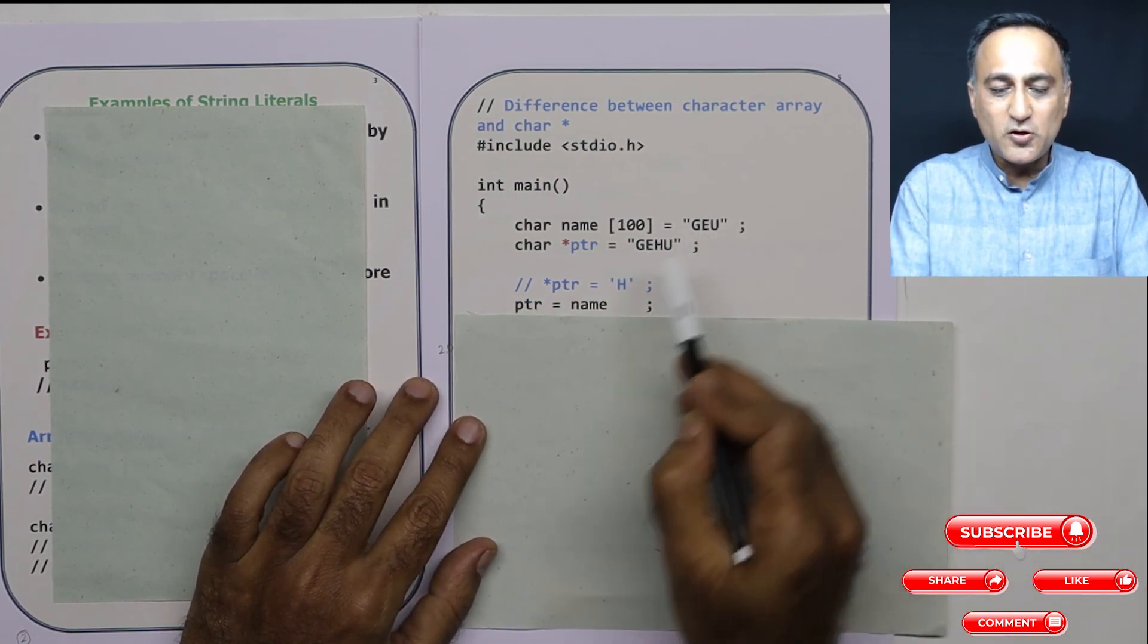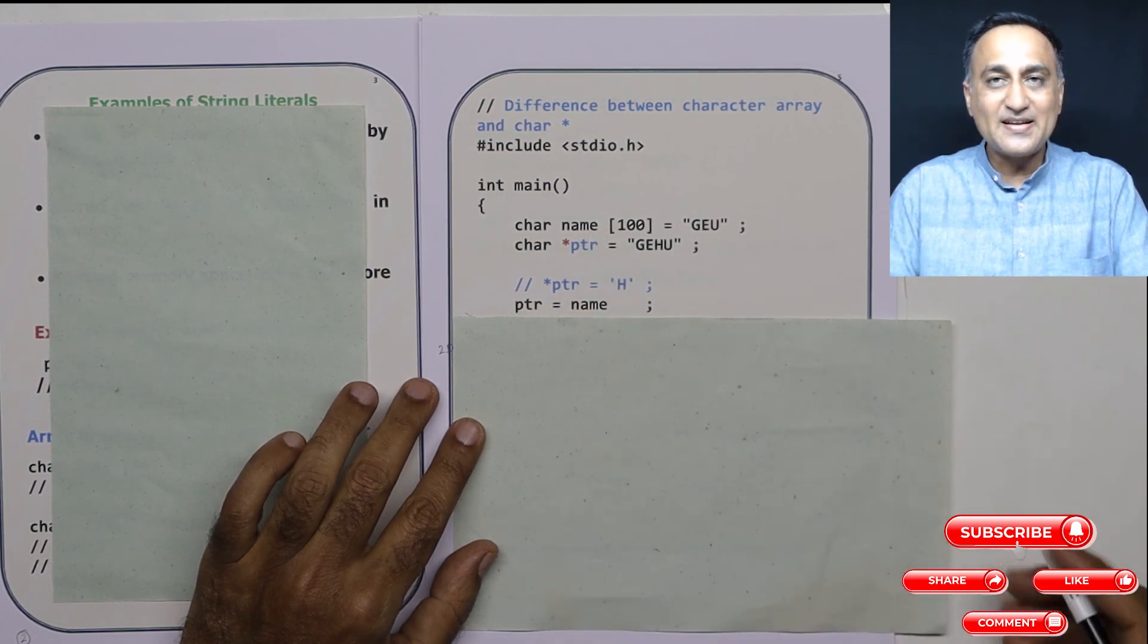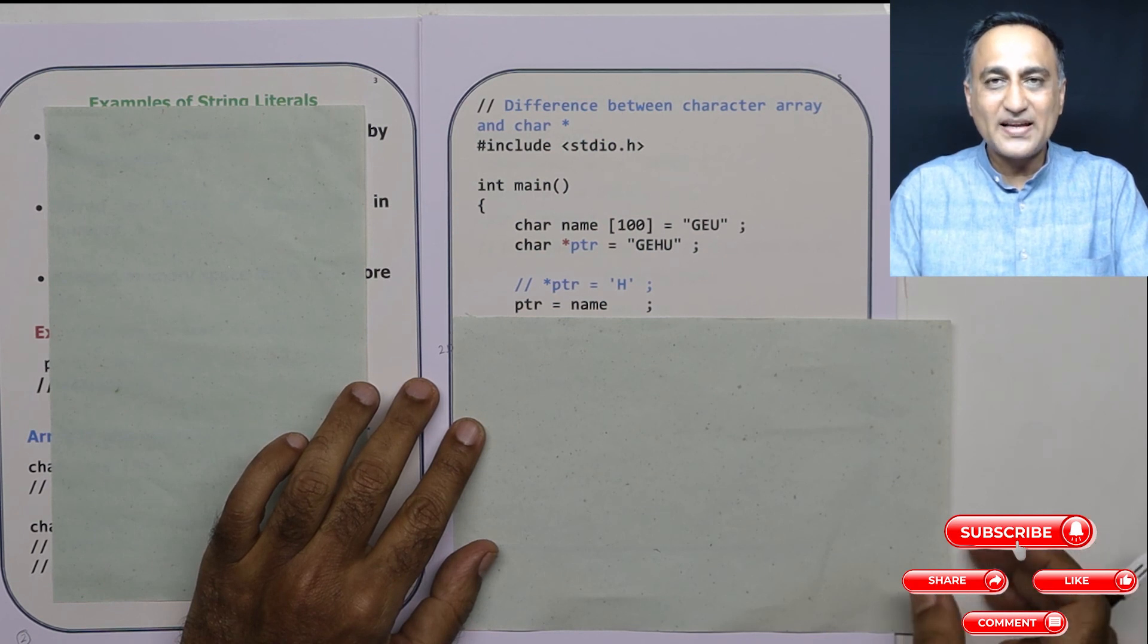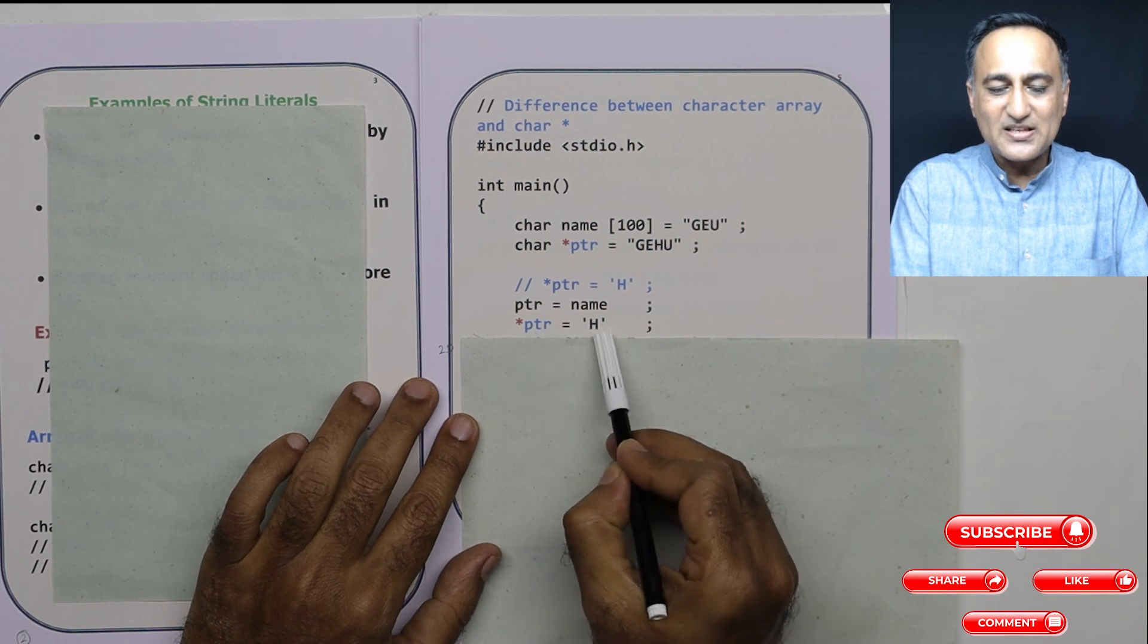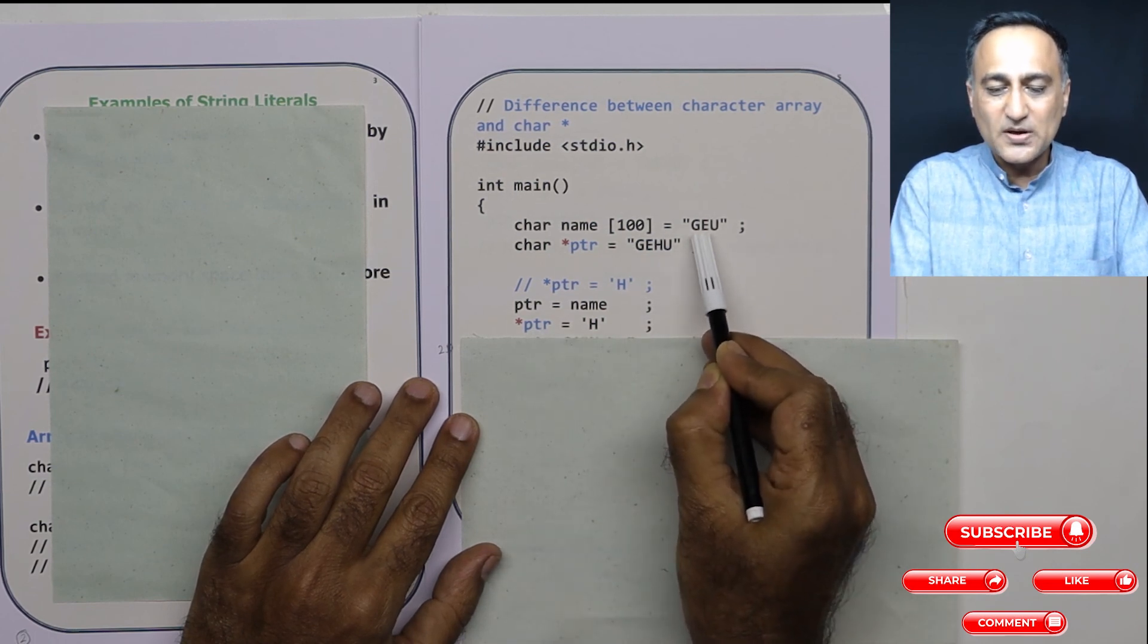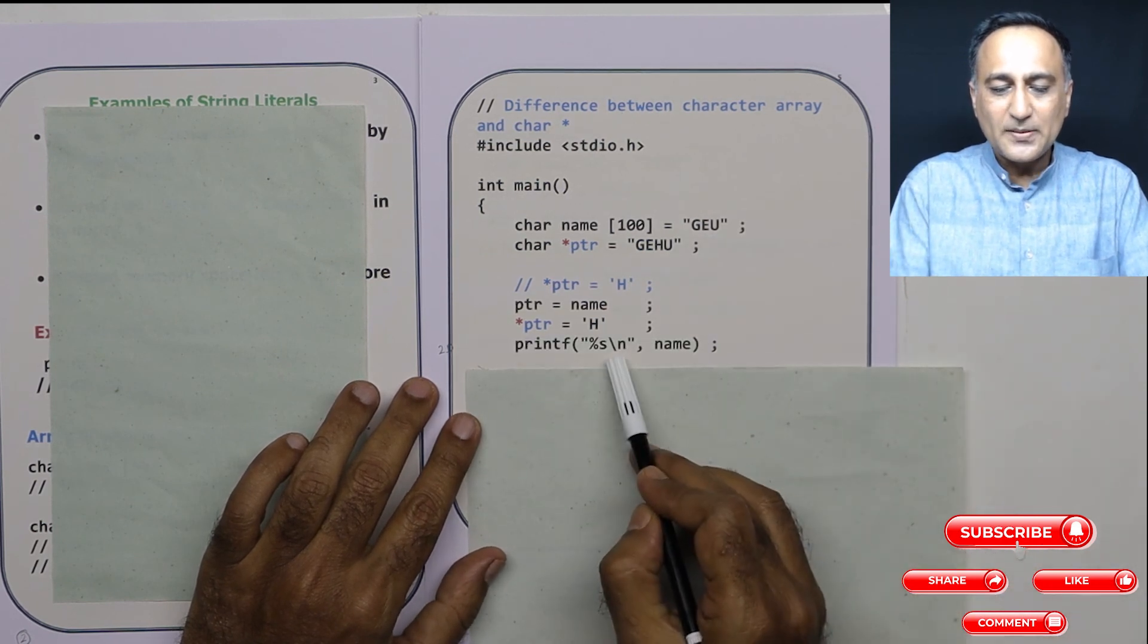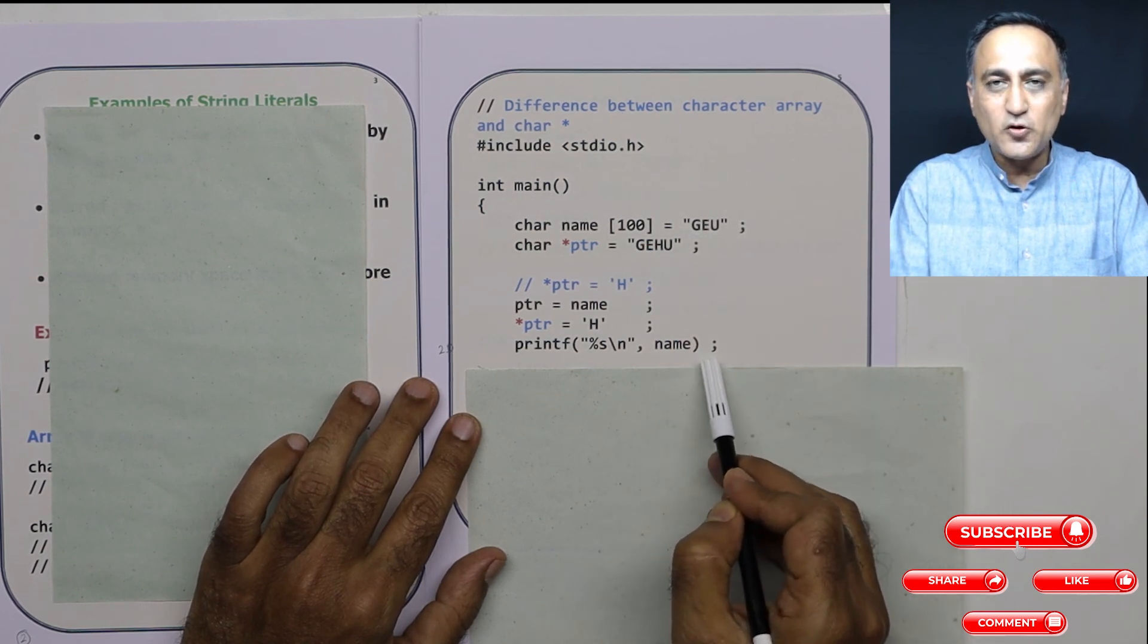Now in order to change "geu", I give ptr equal to name. Suppose name existed at address 1000, ptr now contains the address 1000. Now if I say *ptr = 'h', this g is replaced with h. So now this becomes "heu". You want to prove that, just print %s name. So instead of printing "geu" it is going to print "heu".